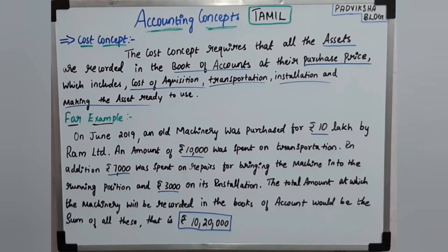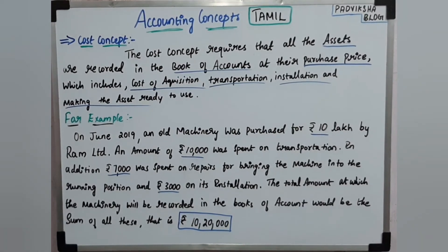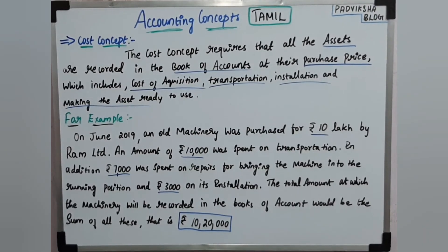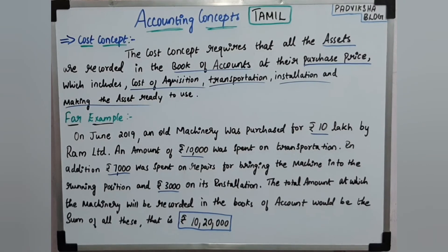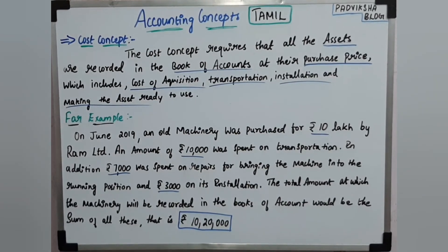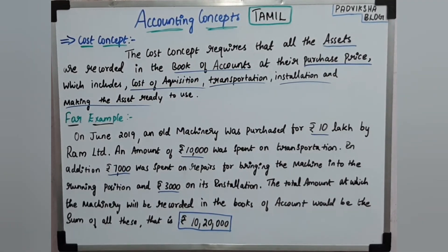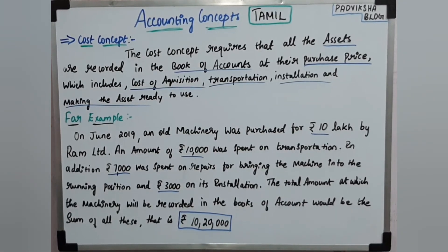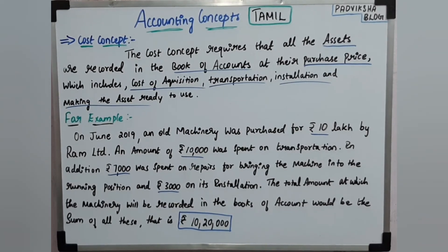The machinery was installed and brought into running position using 3,000 rupees. So the total value is: 10 lakhs + 10,000 (transportation) + 7,000 (repairs) + 3,000 (installation) = 10,20,000. The machinery is recorded in books of accounts at 10 lakhs because that's the purchase price, and we add 20,000 for all the additional expenses.